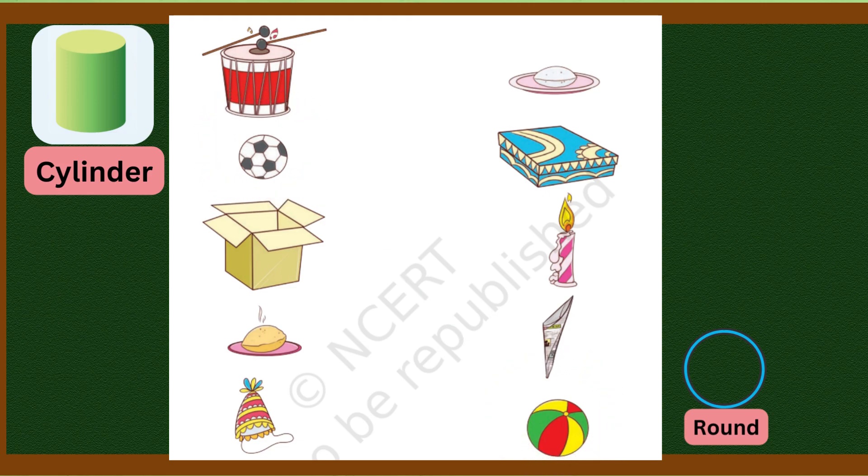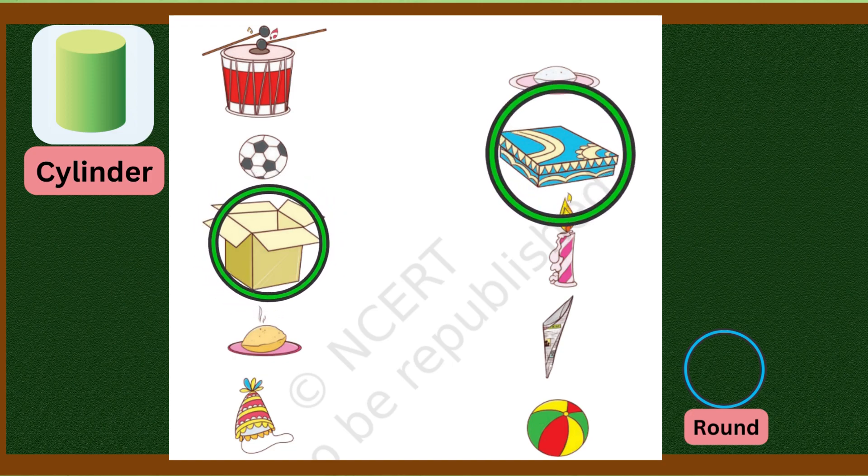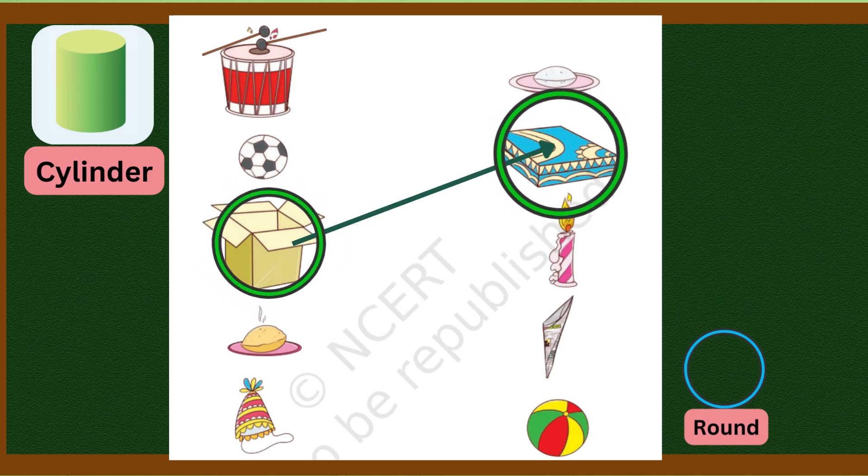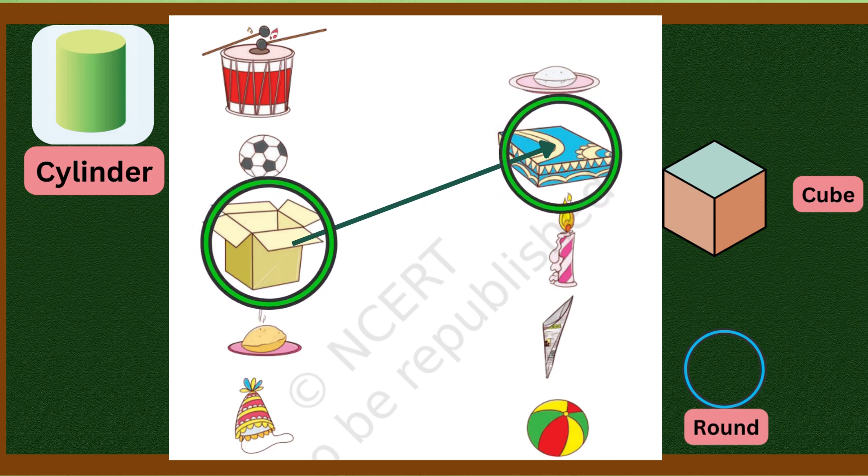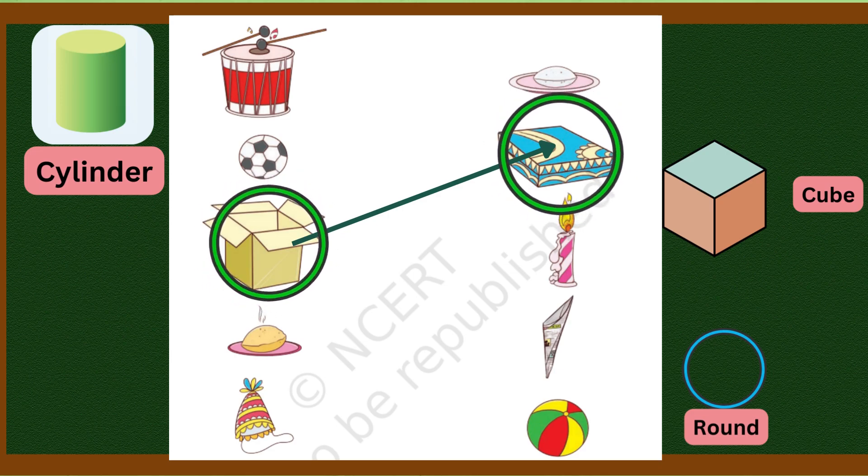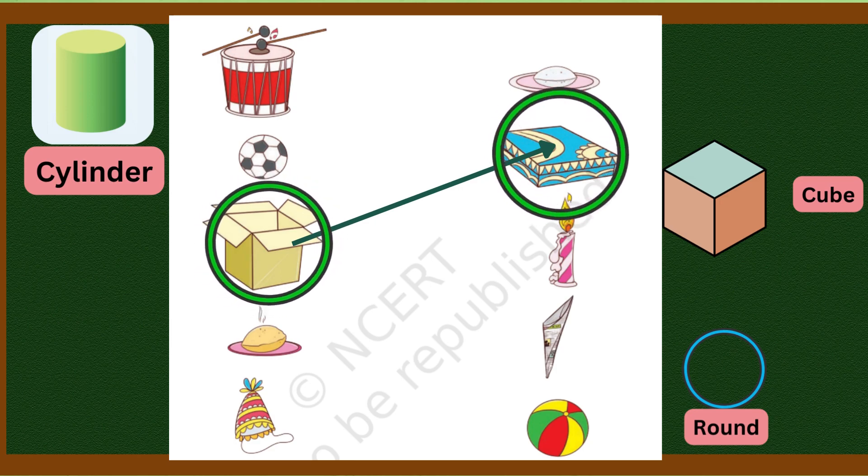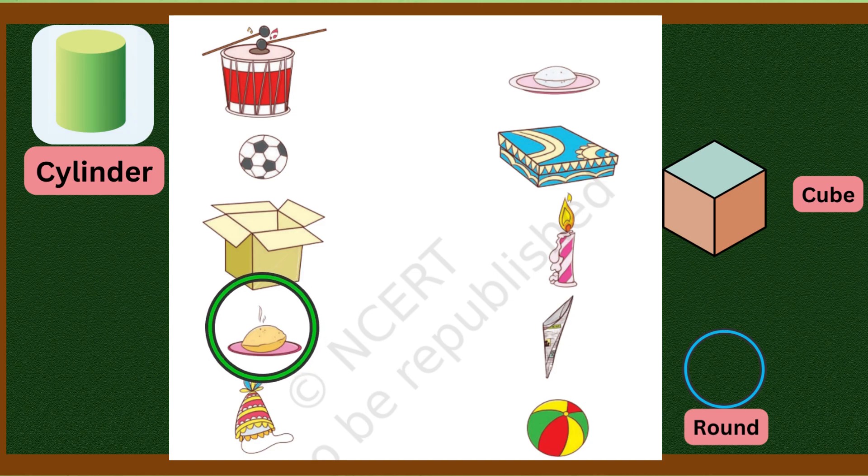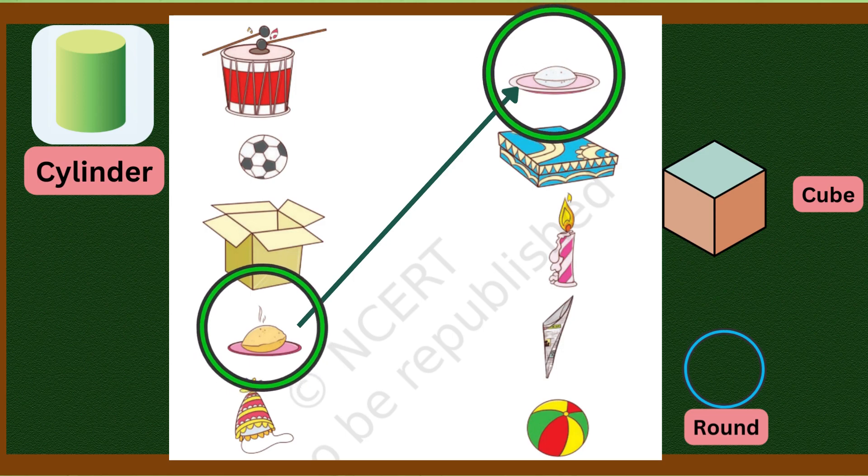Then we are having a box. The box's shape is cube. See, I have drawn it here. The cube shape has length, breadth, and height. We will see all this in detail in the next slides. Next we have roti or chapati. The same is also given on this side. So we will match these two together and what is their shape? Round.